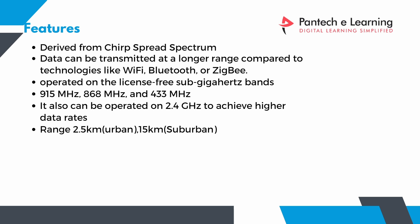Before interfacing the module, we have to know the features of the module. LoRa is derived from chirp spread spectrum. Chirp spread spectrum is a wave which is like radio frequency — the waves that bats use to communicate. LoRa uses these waves, and data can be transmitted at a longer range compared to Wi-Fi, Bluetooth, or Zigbee.